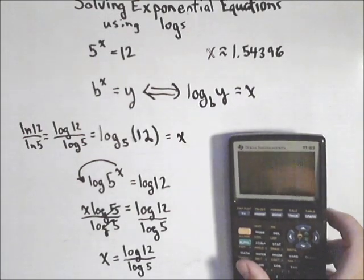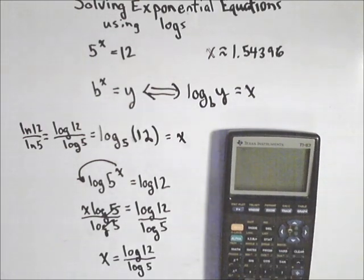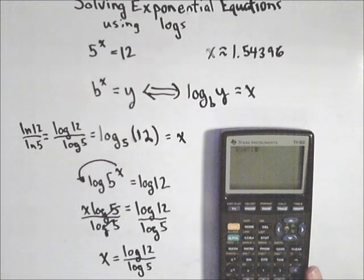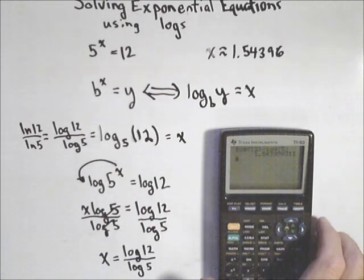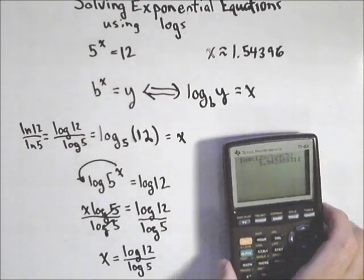Now I said we'd use that number to verify when we checked with our graph. So log(12) / log(5). And we get the same thing. 1.543959311.